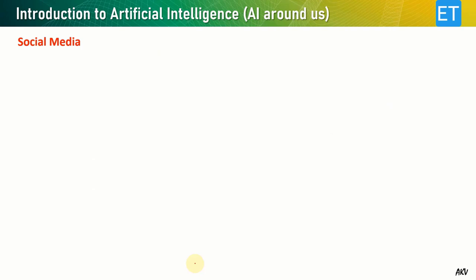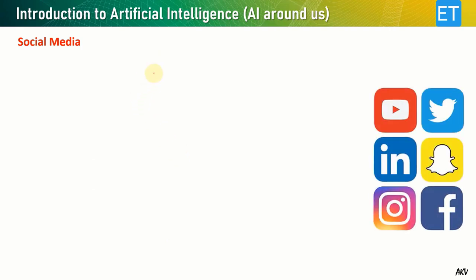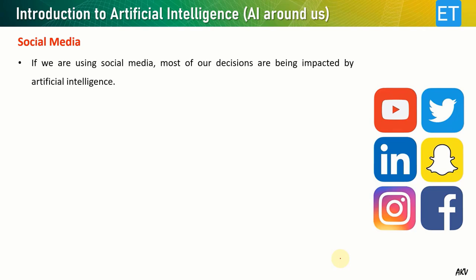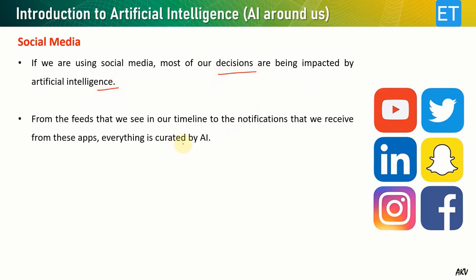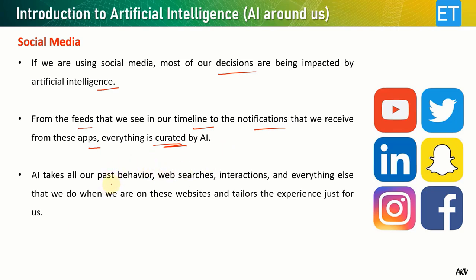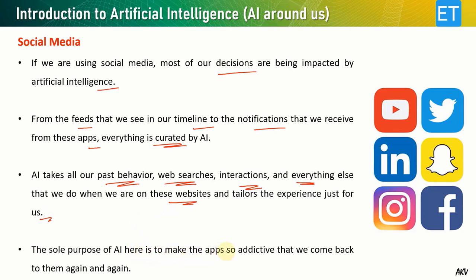In social media — YouTube, Twitter, Snapchat, Instagram, Facebook — most of our decisions are impacted by artificial intelligence. The feeds on your timeline and the notifications you receive are all curated by AI. It takes our past behavior, searching patterns, and interactions, and according to our interests it tailors the experience just for us. The sole purpose of AI here is to make the app so addictive that we keep coming back.